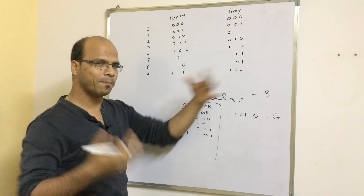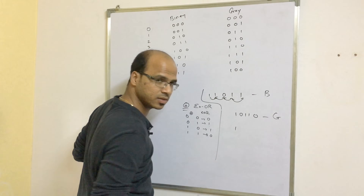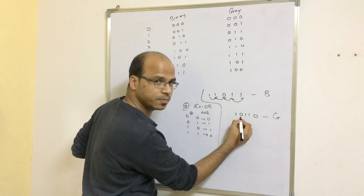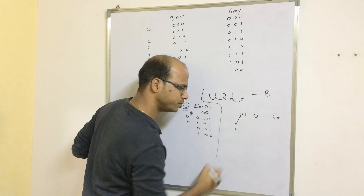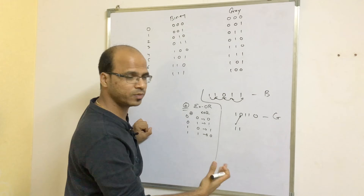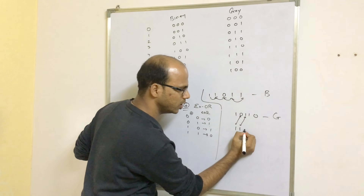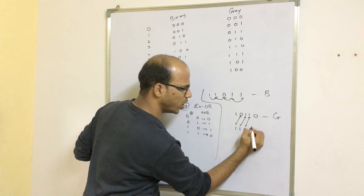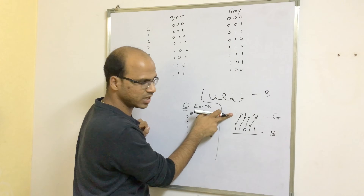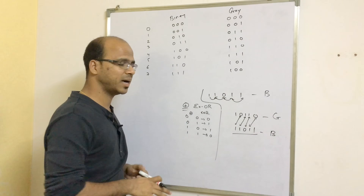How do you get a binary code back from a gray code? Take the first bit of the gray code as it is — that's your first output bit. Then XOR the second input bit with the first output bit: 0 XOR 1 = 1. Then XOR the third input bit with the second output bit to get the next output. Continue this way to recover all the binary bits. So from binary we get gray code, and from gray code we get binary back.